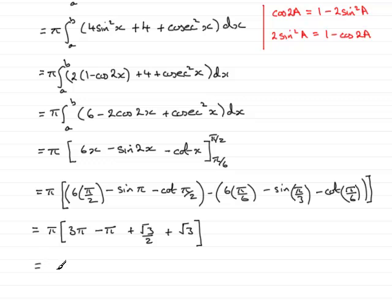And finally then, grouping this up, we have pi, square bracket then, 3 pi minus pi, that's 2 pi. And root 3 upon 2 plus another root 3, that's going to be 1 and a half root 3, or simply 3 root 3 over 2. And that gives us the volume of revolution then, the exact value. And that brings us to the end of this example.